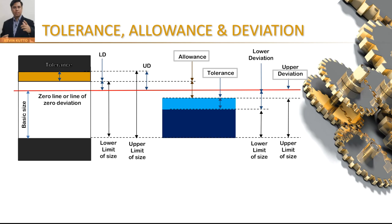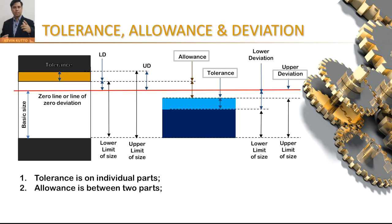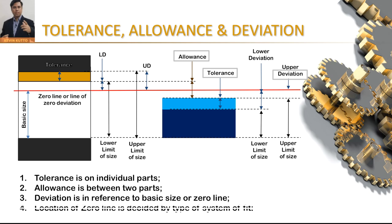You might be wondering: what is the value of basic size, and where should I place my zero line? In actual practice, the zero line will always be placed either on the hole or the shaft, depending on whether it is a hole-based system of fit or a shaft-based system of fit. To summarize: tolerance is always on the individual part; allowance is always between two parts and represents the worst case for assembly; and deviation is referenced to the basic size or zero line.